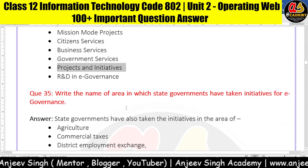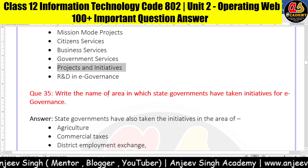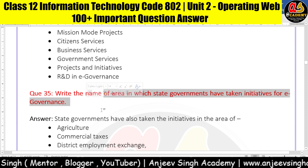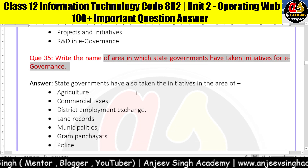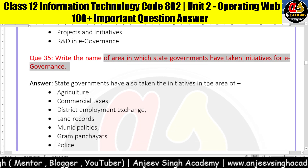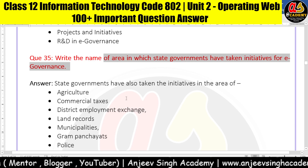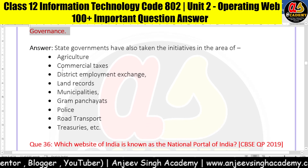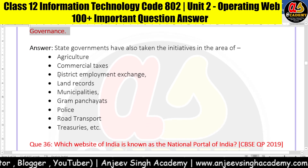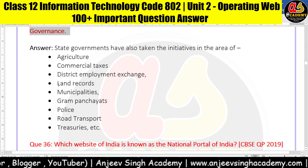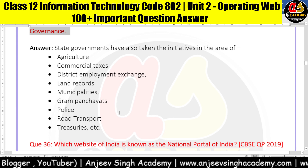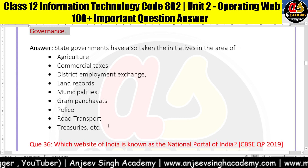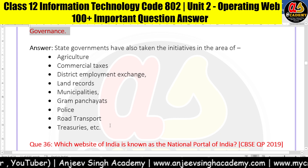Question number 35: write the name of the areas in which State Governments have taken initiative for E-Governance. State Governments have also taken initiative in the areas of Agriculture, Commercial Taxes, District Employment Exchange, Land Records, Municipalities, Gram Panchayat, Police, Road Transport, and Treasury.